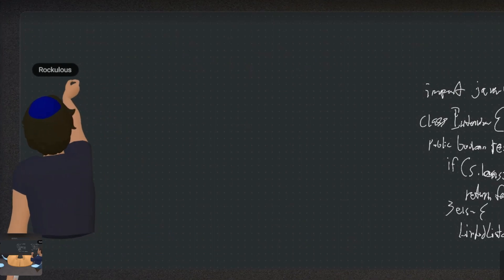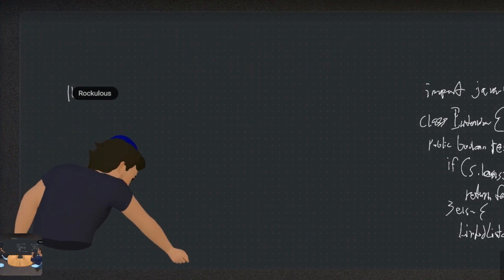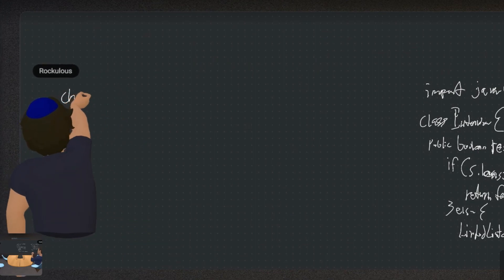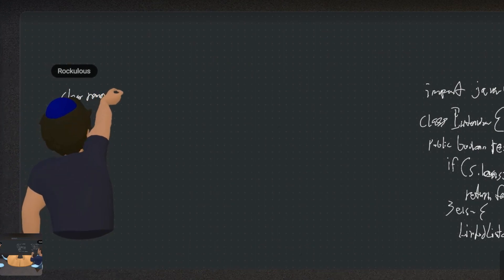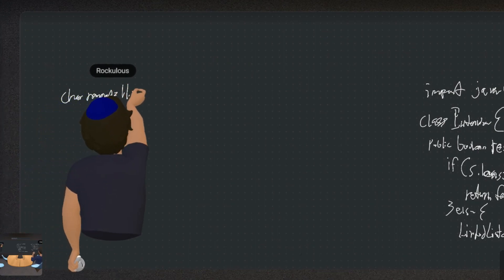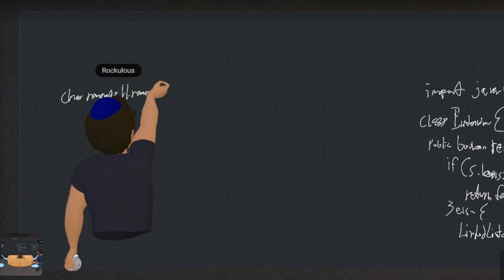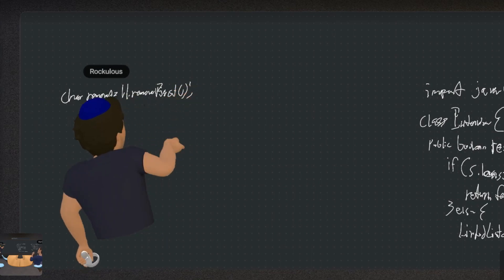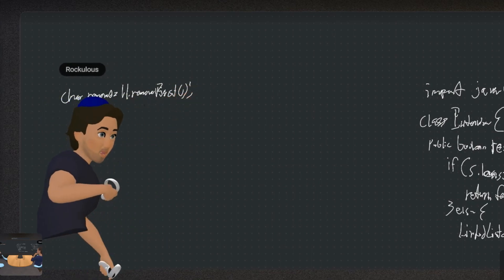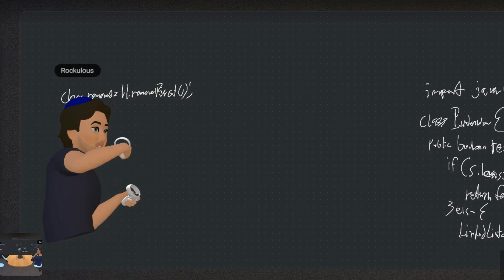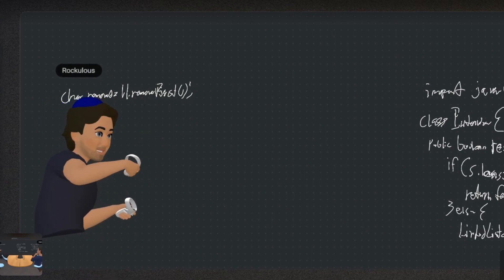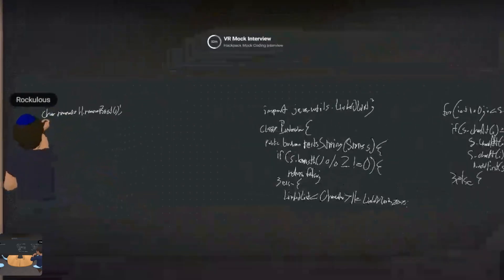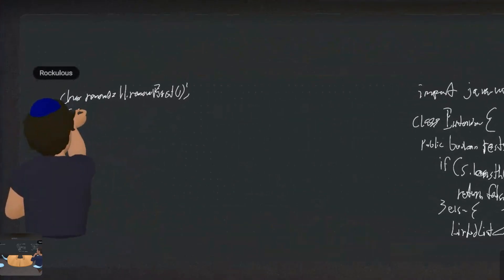So we're going to do ll.removeFirst(). What that does in linked lists is pop off the first element and automatically switch the pointer at the front of the list to be the next element in that list.